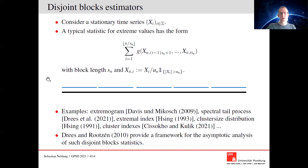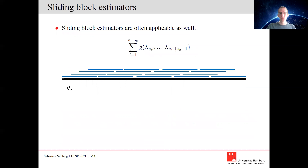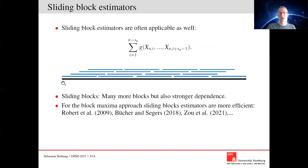Now we could ask ourselves: why should we use just disjoint consecutive blocks? What happens if we use so-called sliding blocks? Instead of starting the second block after the first one ended, we could take the first block, drop the first observation, add another, and so on. This way we can slide through our time series — illustrated by the many more blocks here — and on the extremes of each of these blocks apply some general function g and sum over many more blocks, giving a general sliding block statistic. Of course we have many more blocks, but two consecutive blocks now have significant overlap — only two observations differ — so there is also a much stronger dependence between them, making it a priori not clear whether this is an advantageous way to define statistics.